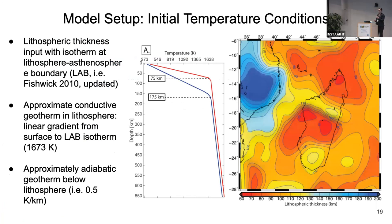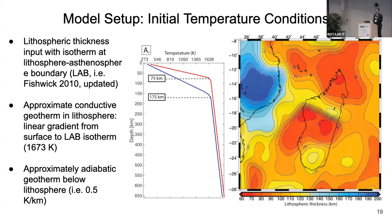For the initial temperature conditions, we also impose a lithospheric structure. The figure shows a lithospheric model for Madagascar and surroundings from the Fishwick 2010 model — blue is thick lithosphere, red is thinner lithosphere. We impose an approximate conductive geotherm for the lithosphere, starting at a constant surface temperature and producing a linear gradient down to the base of the lithosphere, then approximately adiabatic below — at 0.5 Kelvin per kilometer.